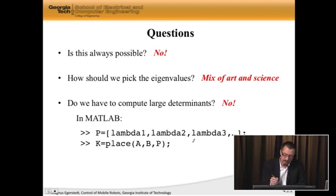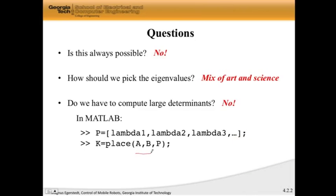If I have my A and B matrices and write down a vector of my favorite eigenvalues, I simply run K = place(A, B, P) to compute the K matrix that gives us the desired eigenvalues.